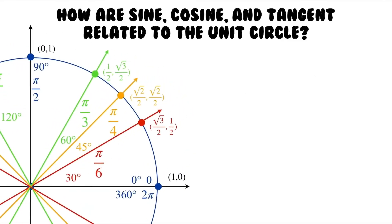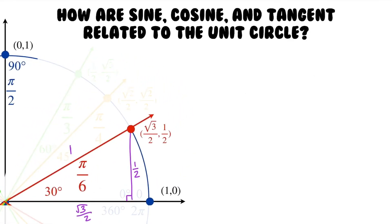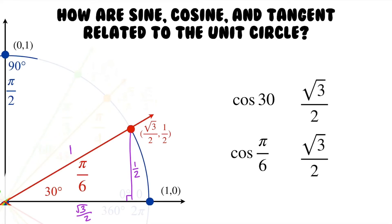Now let's take a look back at our 30 degree angle and talk about cosine. If we want to find the cosine of this angle, we do adjacent over hypotenuse. The adjacent is root 3 over 2, and the hypotenuse is 1. So root 3 over 2 divided by 1 gives us root 3 over 2. So our cosine is root 3 over 2. And if you look carefully, this is the same number as the x value of this point right here.